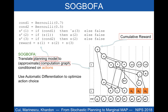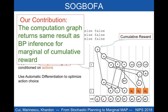Sugbofa then optimizes action variables using automatic differentiation. Our first result proves that the computation graph returns exactly the same numerical result as belief propagation inference would return when calculating the marginal of the cumulative reward in the corresponding dynamic Bayesian network.